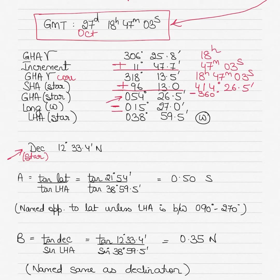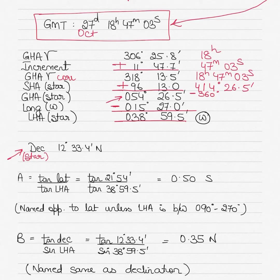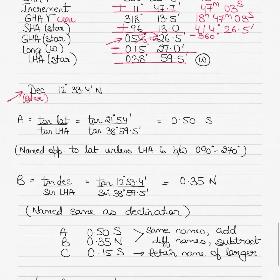With west longitude, subtract it from the GHA — the rule is 'longitude West, GHA best,' meaning GHA is greater than LHA. For east longitude, GHA would be less than LHA. Subtracting the west longitude of 15° 27' from the GHA 54° 26.5' gives LHA star as 38° 59.5'. Since the LHA is between 0° and 180°, it is named West.